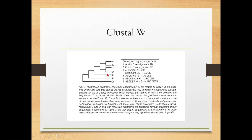Based on the guide tree, since A and B are very closely related, first align A with B to produce alignment A,B. Then align C with D to produce alignment C,D. Then align A,B with C,D to produce alignment A,B,C,D. Then sequences E, F, G are sequentially aligned with A,B,C,D in order of relatedness — first E, then F and G — progressively aligning sequences with the existing alignment. This is why the algorithm is called the progressive alignment algorithm.